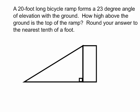A 20 foot long bicycle ramp forms a 23 degree angle of elevation with the ground. How high above the ground is the top of the ramp? Round your answer to the nearest tenth of a foot. So we have a 20 foot long ramp. We know that it forms a 23 degree elevation with the ground.